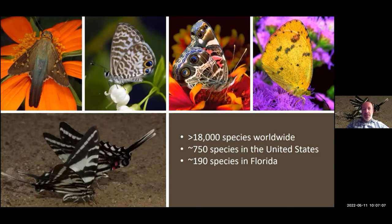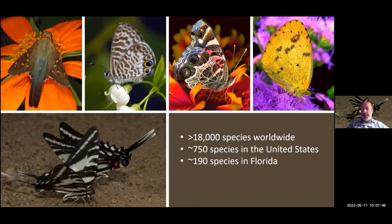Florida is the most diverse state east of the Mississippi when it comes to butterfly species, making it a great place to garden for and watch butterflies. That number of 190 species is somewhat fluid because Florida is at the confluence of more temperate species to the north and more tropical species to the south. Due to proximity to the Caribbean, we often get many tropical strays or even seasonal colonists into south Florida, so that number vacillates from year to year.